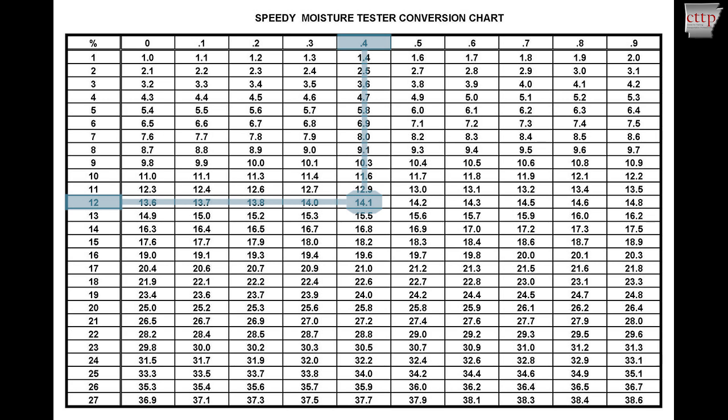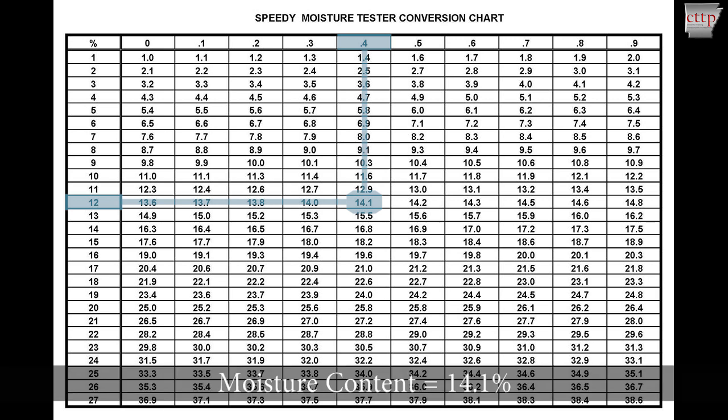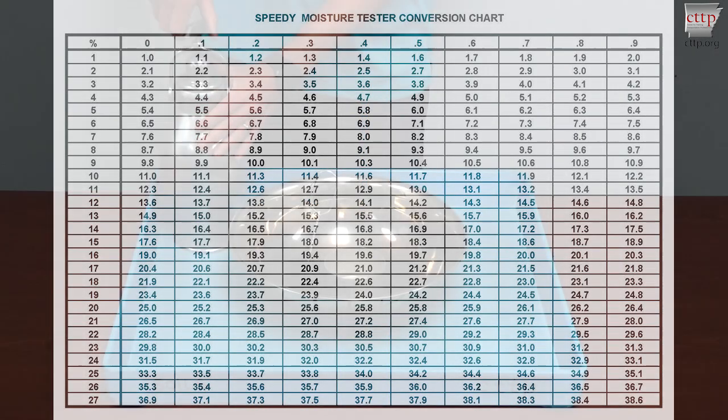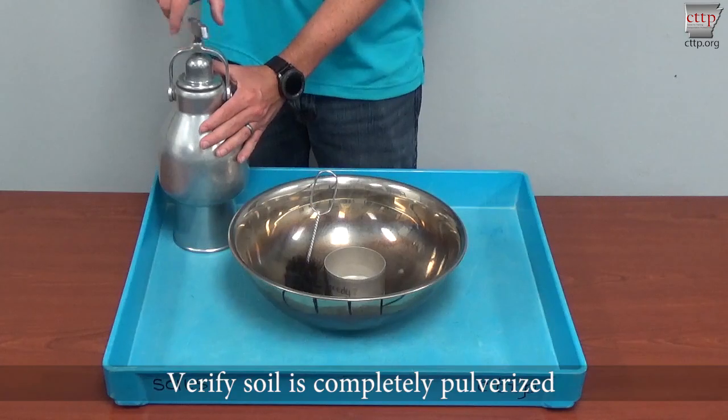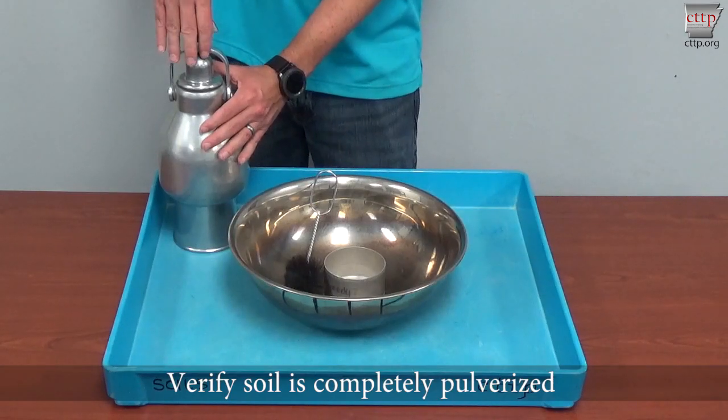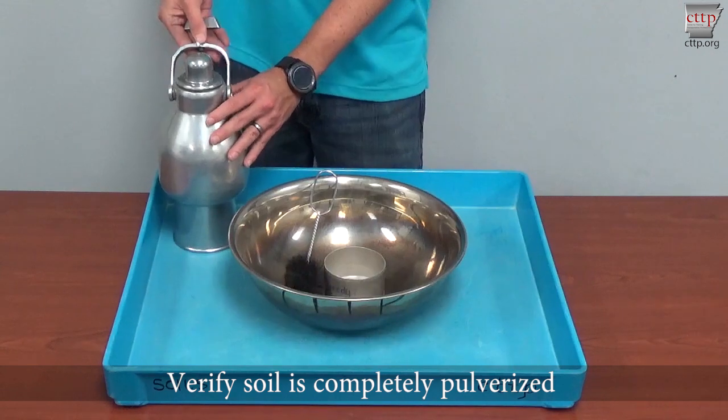For this test, 12 is highlighted on the left and 0.4 is highlighted at the top. The intersecting value, 14.1%, is the reported moisture content. Loosen the cap and allow the pressure to escape.